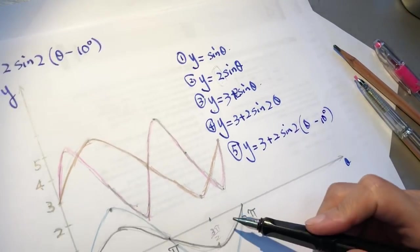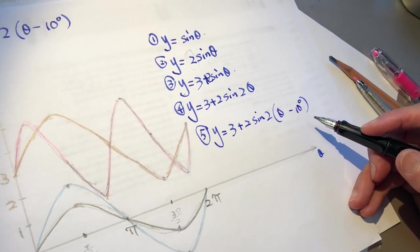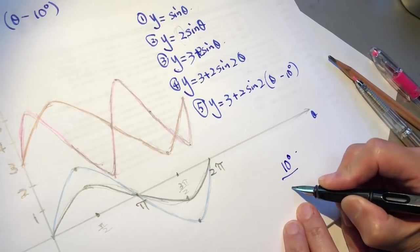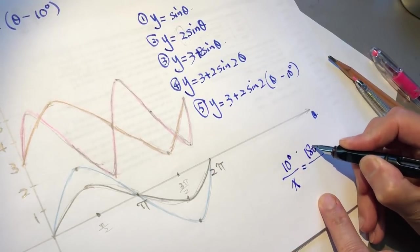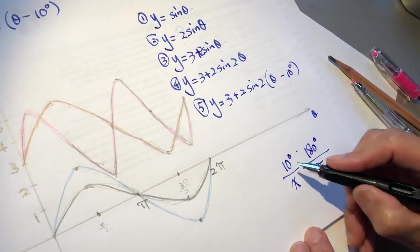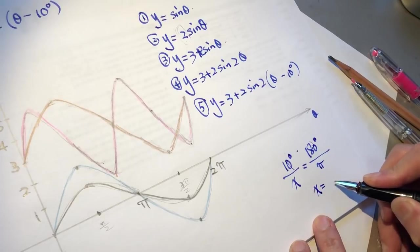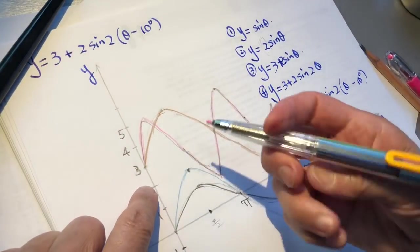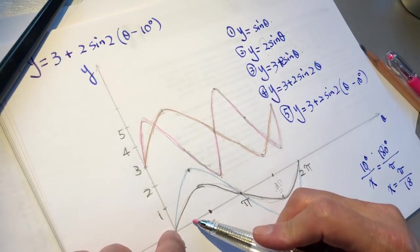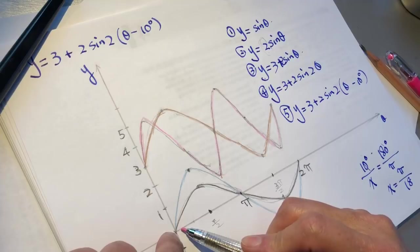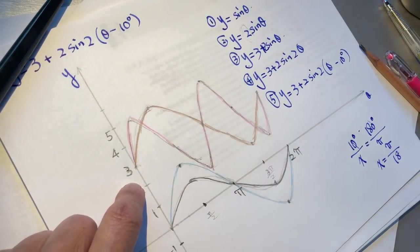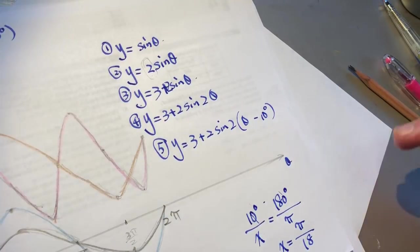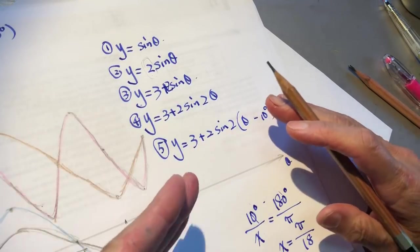We are using radians, so we need to convert 10 degrees. Since 180 degrees equals pi radians, 10 degrees equals pi over 18 radians. Pi over 18 is a very small value — somewhere around one-eighth pi on the axis, around here.